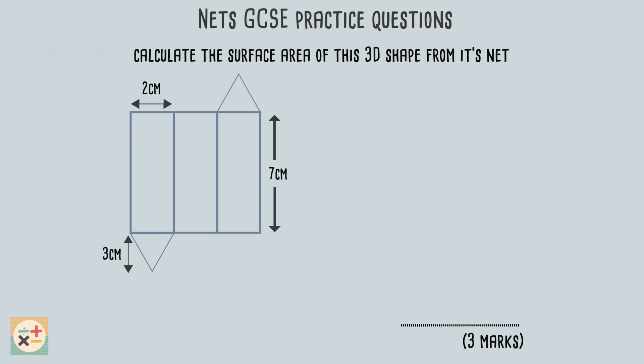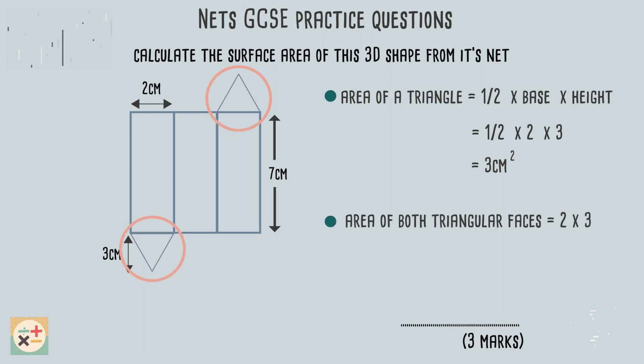So, let's start with finding the area of one triangular face first. The formula for finding the area of a triangle is half times base times height. In the diagram we are given the length of the base, 2 cm, and the perpendicular height of the triangle, 3 cm. We can now calculate the area of the triangular face. Because the net contains 2 triangular faces, we can multiply our answer by 2 to find the area of both. Let's make a note of this and move on to finding the area of the rectangular faces.